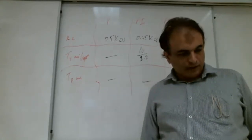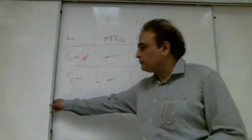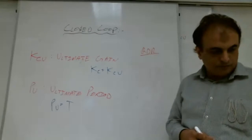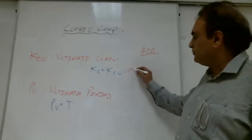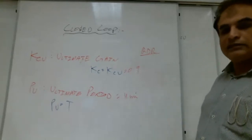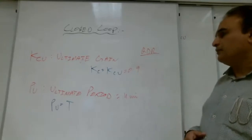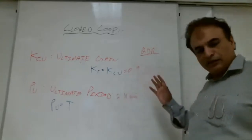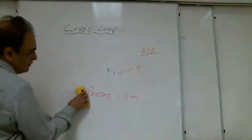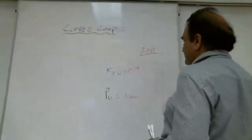Problem 4.1: Please determine the QDR tuning parameters for a PID controller if the gain at which the controller requires to sustain oscillation is 0.9 and the period of oscillation is four minutes. So kcu equals 0.9 and pu equals four minutes. What is given here? The gain of the sustained oscillation — that is kcu — and the time period pu.